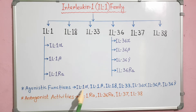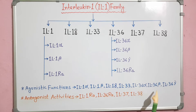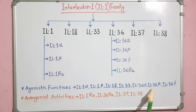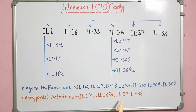IL-1 alpha, IL-1 beta, IL-18, IL-33, IL-36 alpha, IL-36 beta and IL-36 gamma — these 7 members have agonistic functions. IL-1RA, IL-36RA, IL-37 and IL-38 — these 4 members have antagonist activities.